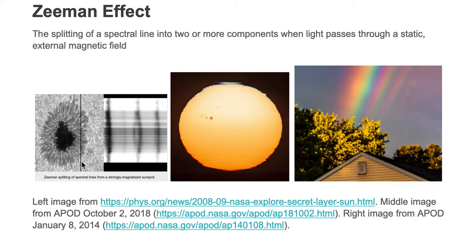Looking at this particular portion of the sunspot region, berry cherry red light coming up from the deep interior of the sun passes through this external magnetic field and we will see the light split. That light splits from berry cherry red into two components: berry red and cherry red. So we have one line, berry cherry red, that splits into two hues — berry red and cherry red — when it passes through this external magnetic field.